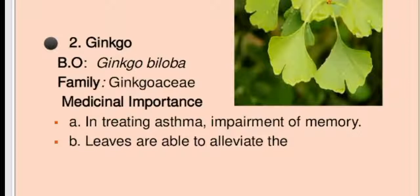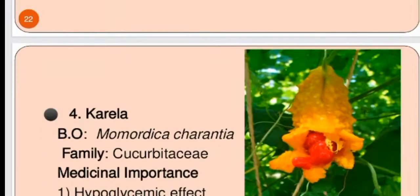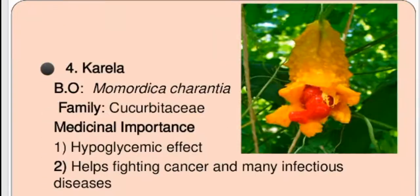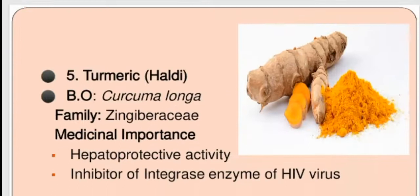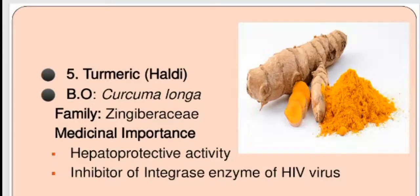Ginkgo leaves are able to alleviate cognitive impairment. Another herb is karela, with biological origin Momordica charantia from the Cucurbitaceae family; it is used for its hypoglycemic effect and helps in fighting cancer and many infectious diseases. Turmeric (haldi), Curcuma longa from the Zingiberaceae family, has hepatoprotective activity and inhibits the integrase enzyme of the HIV virus.